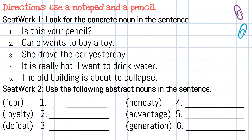Seat work 1: Look for the concrete noun in the sentence. Number 1: Is this your pencil? Number 2: Carla wants to buy a toy. Number 3: She drove the car yesterday. Number 4: It is really hot. I want to drink water. Number 5: The old building is about to collapse.